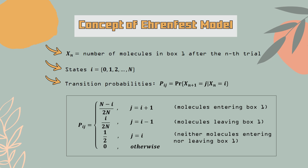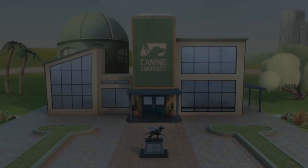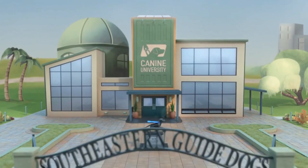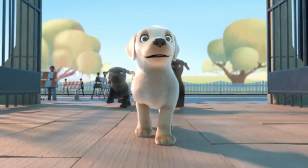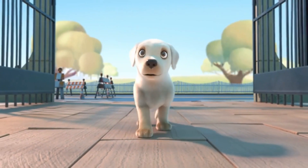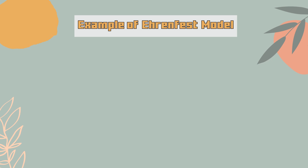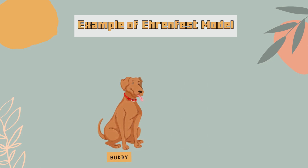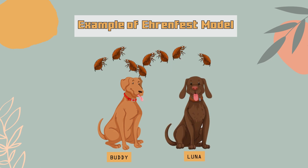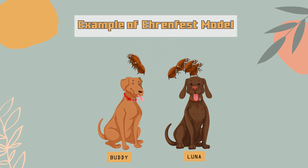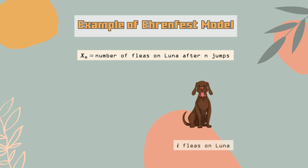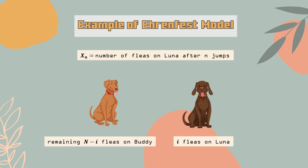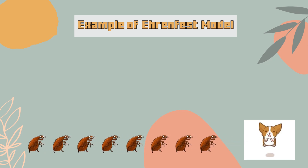To get a better understanding, the Ehrenfest model can be illustrated by the jumps of fleas between two dogs. Consider two dogs called Buddy and Luna sharing a population of N = 8 fleas. Fleas are picked uniformly at random and then accidentally pick a dog for the flea to jump to. Let X_n be the number of fleas on Luna after n jumps. Assuming there are i fleas on Luna and the remaining N minus i fleas on Buddy, we proceed with a first step analysis by enumerating the transition possibilities.